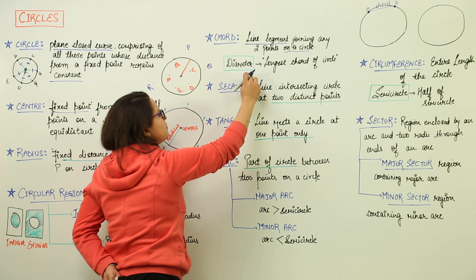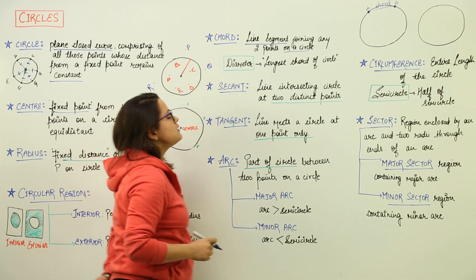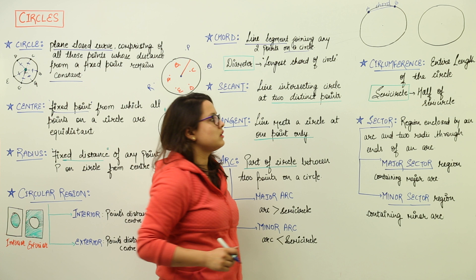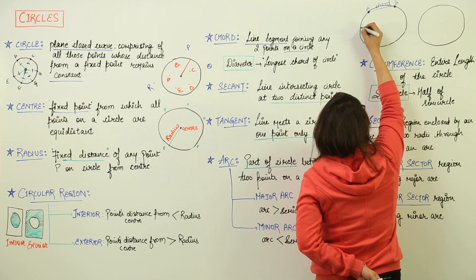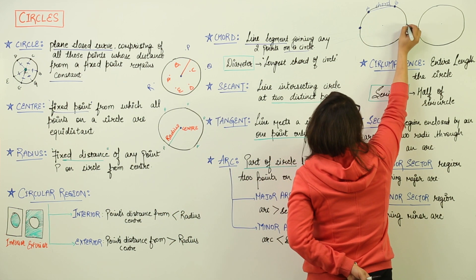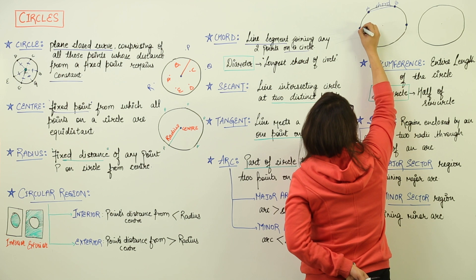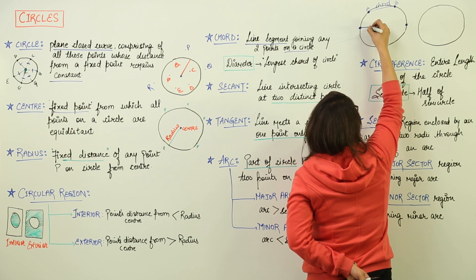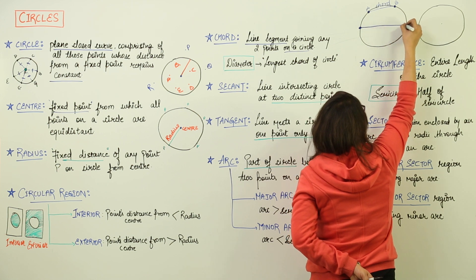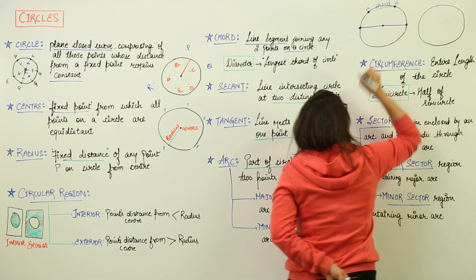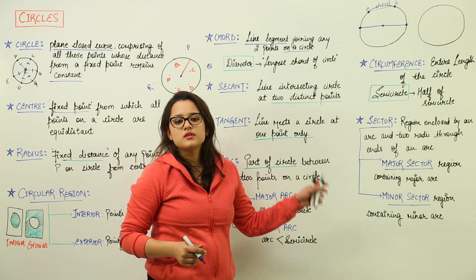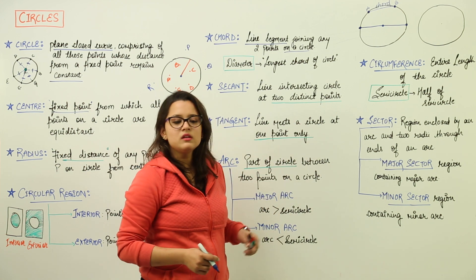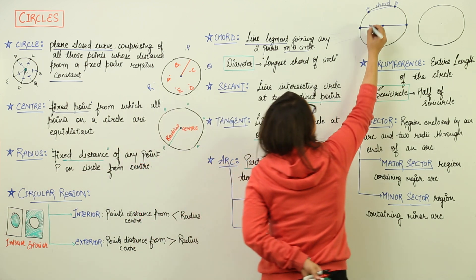Here we get another term, that is diameter. Diameter is actually the longest chord of the circle. The diameter would be here — that is the longest chord possible. The two points on the circle are joined by a line segment which is passing through the centre of the circle. This is the possibly maximum, or you can say the longest chord of this circle. So that is known as the diameter.